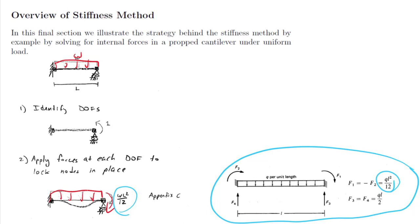Now same as in the flexibility method, we've now introduced an error. That node has to rotate. So the goal here is to apply a moment in the other direction that's going to counterbalance that and give us a zero moment at that node.